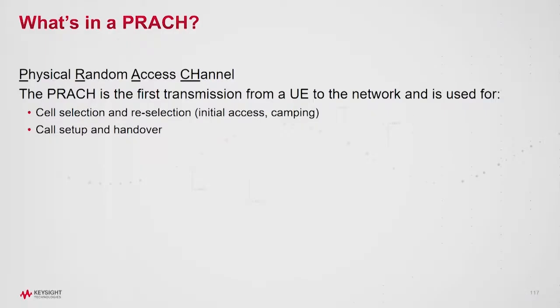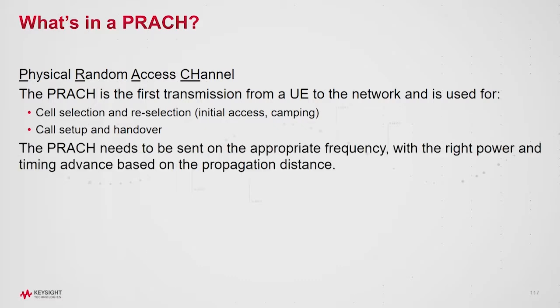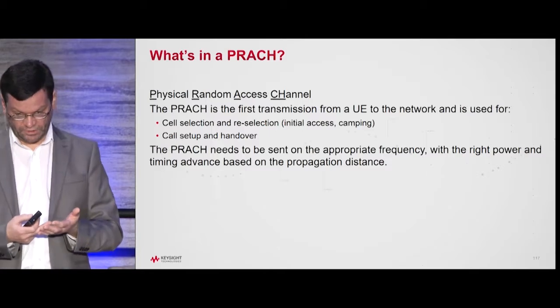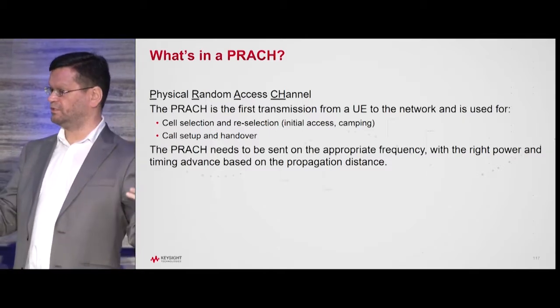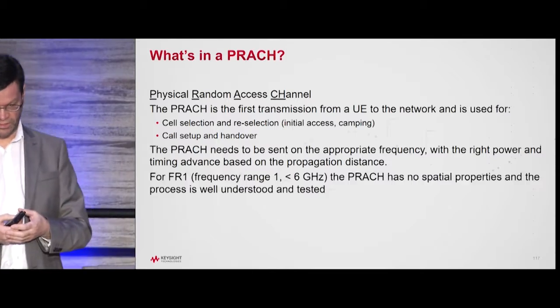What's a PRACH? It's the Physical Random Access Channel — this is the first communication from the mobile to the network, done at a time when the mobile doesn't know where it is, so there are issues in terms of timing advance. The PRACH is used for initial access, for camping on the cell, for actual call setup, and for handover. You have to send a PRACH on the right frequency, with the right power, and the right timing advance based on the actual distance you are from the base station.